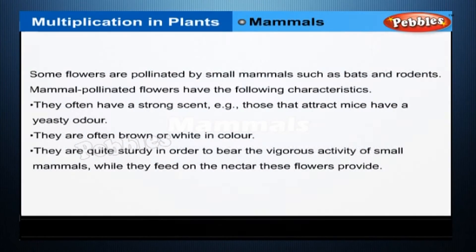Mammals: some flowers are pollinated by small mammals such as bats and rodents. Mammal-pollinated flowers often have a strong scent — those that attract mice have a yeasty odour. They are often brown or white in colour. They are quite sturdy in order to bear the vigorous activity of small animals while they feed on the nectar these flowers provide.